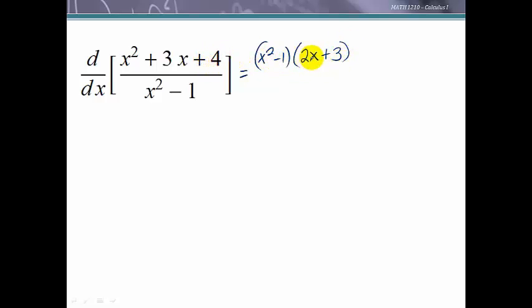So this was bottom times the derivative of the top minus the top we need in parentheses because we want to multiply the whole thing times the derivative of the bottom. This is just a power rule and the derivative of a constant is zero all over the bottom squared. So there's the quotient rule.